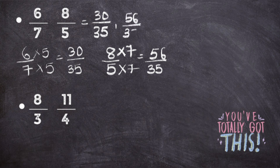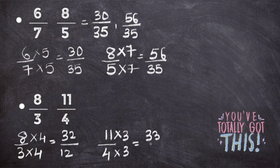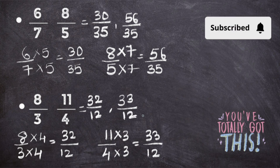Now the last question: the first fraction is eight upon three. Take it as it is and multiply with the denominator of the other fraction. The two equivalent fractions are eleven upon twelve and thirty-three upon twelve. Hope you have understood — meet you in the next video, till then take care.